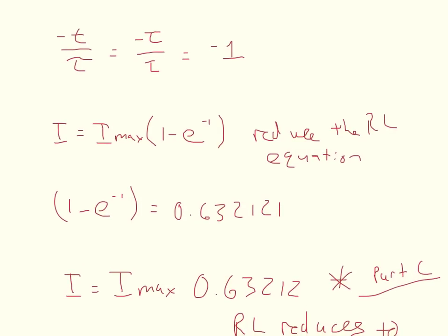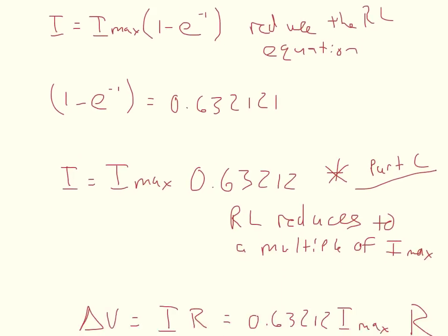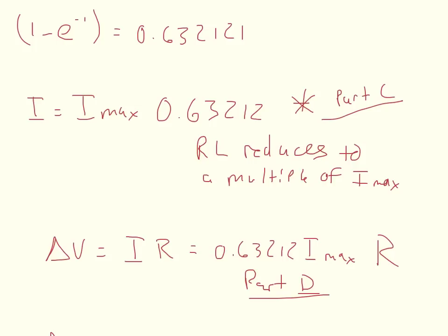Now the next thing it asks for is the voltage at some time constant. So after one time constant, we go back to Ohm's law and the voltage is going to equal I times R. And we're going to use this I right here. So you could plug in this and substitute, but we've already calculated what this is, it's already plugged in your numbers to figure out what I is. So you just I times R, which could, like I said, could also be 0.63212 times I max times R.